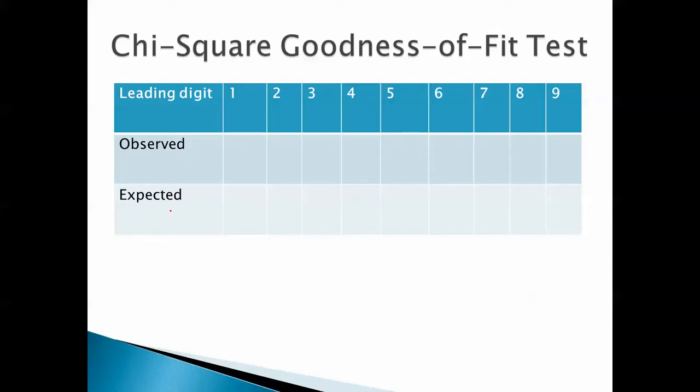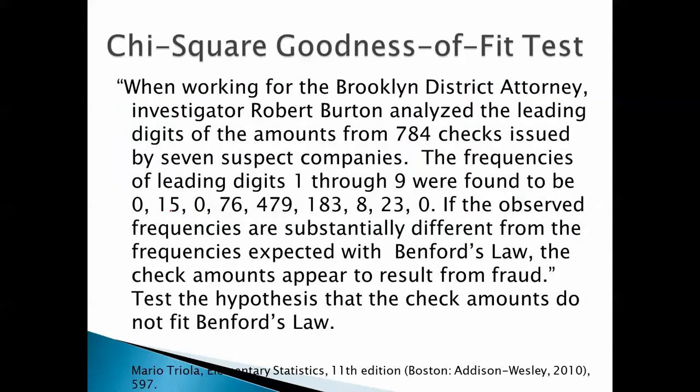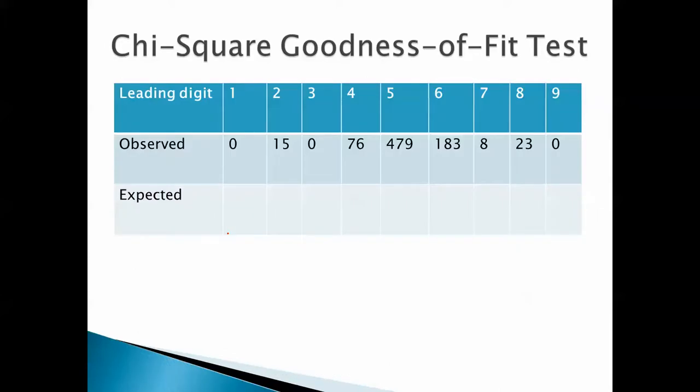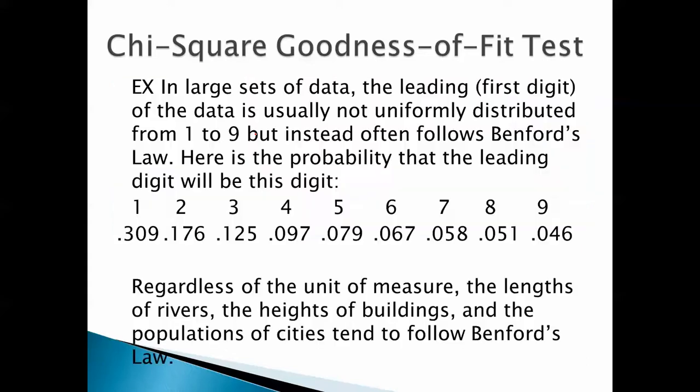So, here are our observed frequencies. Well, let's get them from here: 0, 15, 0, 76, etc. So, in other words, of the 784 checks, the leading digit was 1 on 0 checks. The leading digit was 2 on 15 checks, etc.